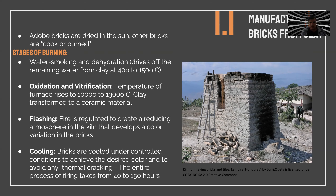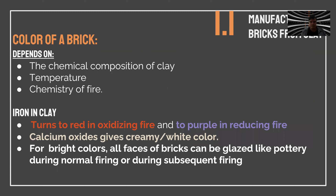This entire process can take between 40 to 150 hours. The color of the brick depends on the chemical composition of the clay, the temperature, and the chemistry of the fire. Iron in the clay will make it red, and if the fire is reduced it becomes purple. When calcium oxide is present it can become creamy or white. When very bright colors are needed, it is possible to glaze the brick like pottery during the normal firing or in a second firing.